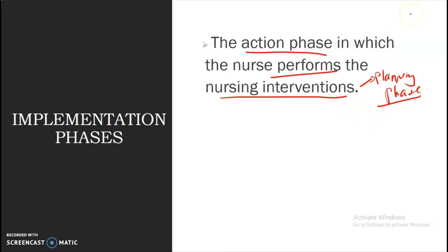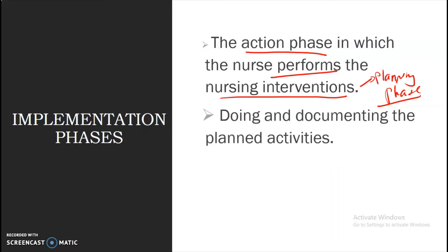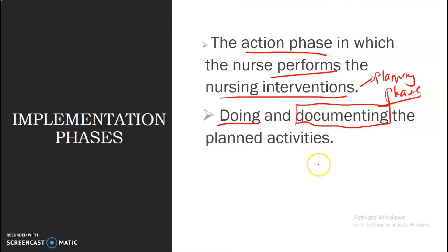In doing your implementation phase, there are two things we need to do. Number one is the performance — doing the planned actions or planned interventions. And of course, whatever we have performed, it has to be documented.